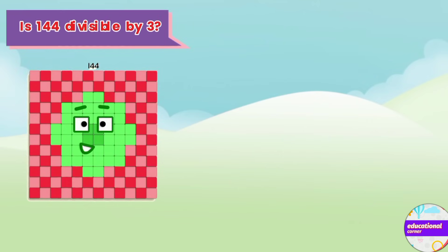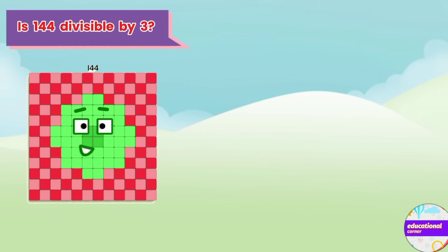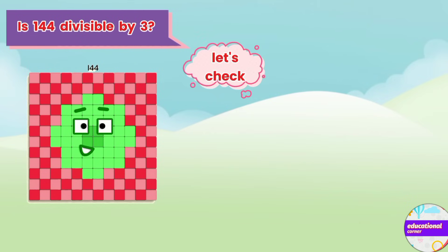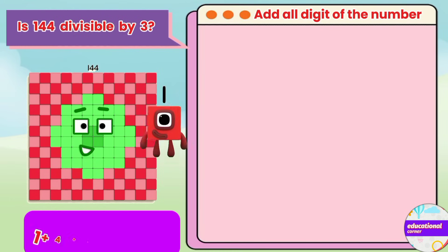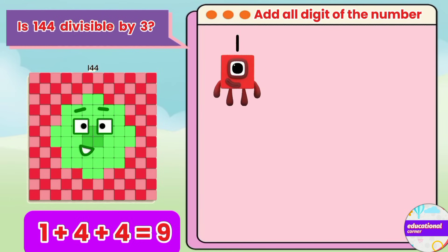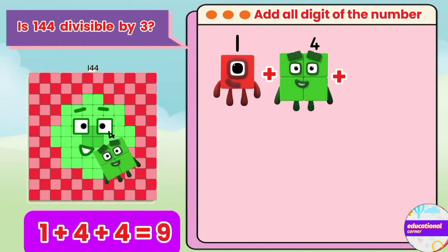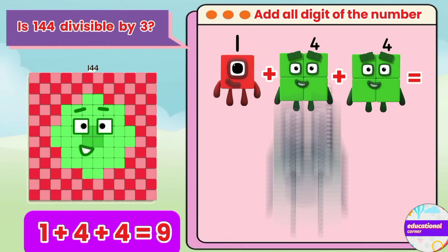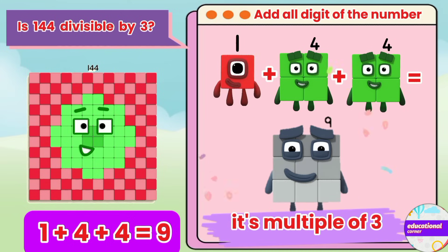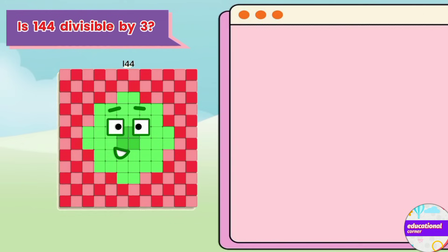Is 144 divisible by 3? Let's check. 1 plus 4 plus 4 equals 9. It's a multiple of 3. Yes!